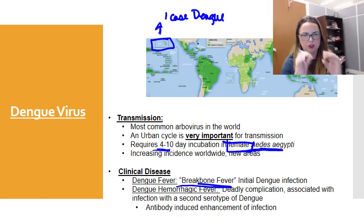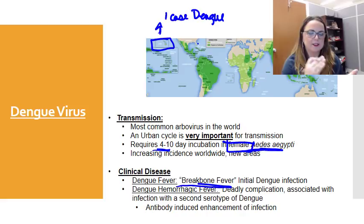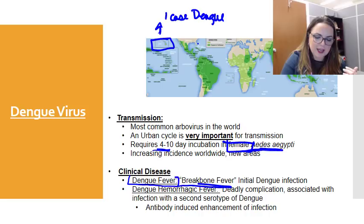Dengue is a really severe flu-like illness that affects infants, young children, and adults. But even though it's incredibly painful, dengue fever alone doesn't normally cause death. What causes death is dengue hemorrhagic fever.